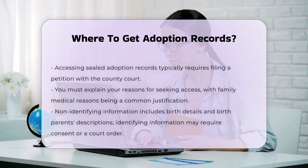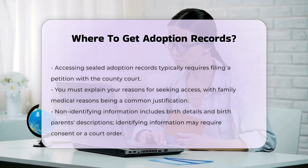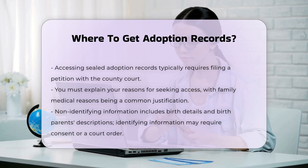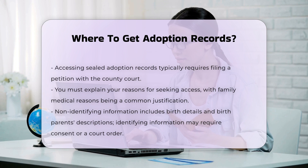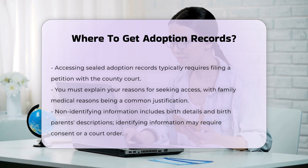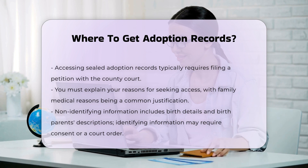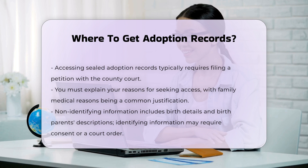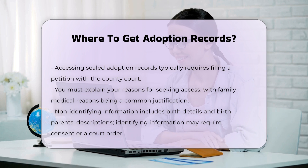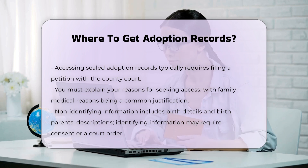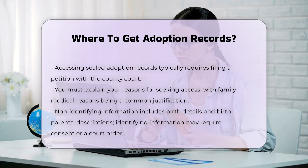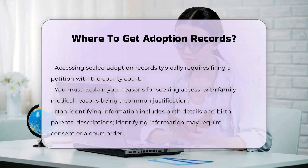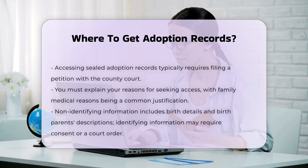Common reasons for granting access include family medical reasons. You can obtain both non-identifying and identifying information from your adoption records. Non-identifying information includes details like the date and place of birth, age, and physical description of your birth parents, and their educational level and occupations. Identifying information, such as names and addresses, may require consent from the birth parents or a court order.